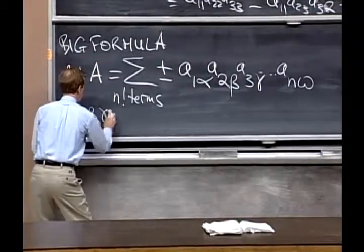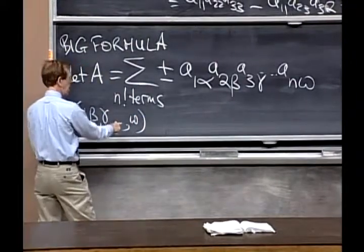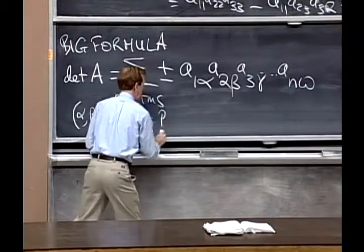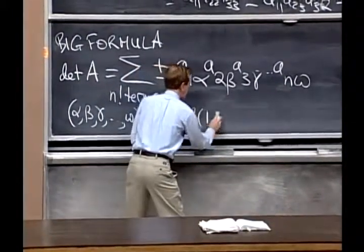gamma, omega, that set of column numbers is some permutation, permutation of one to n.